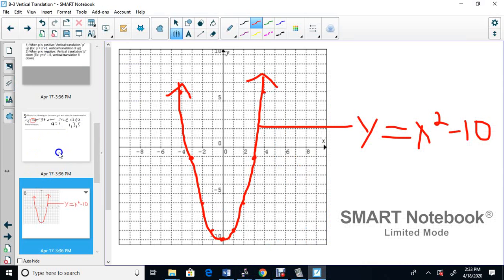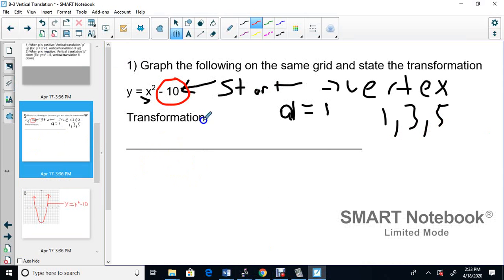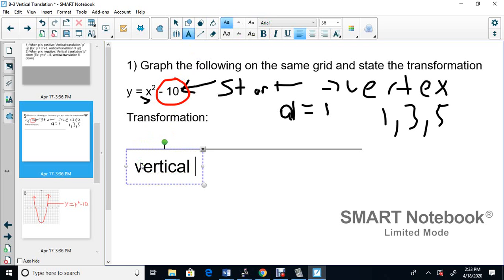I'll come back over here and we'll put the transformation which I missed. I'll type it. Here we call this a vertical translation. It went down 10, down by 10. So vertical translation 10 down.